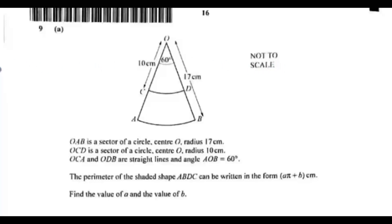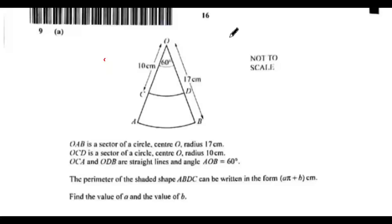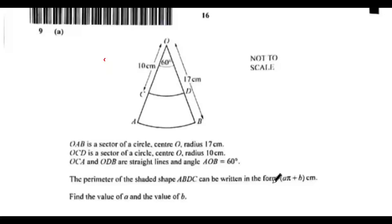Let's jump into question 9A. OAB is a sector of a circle, center O, radius 17 cm. OCD is a sector of a circle, center O, radius 10 cm. OCA and ODB are straight lines and angle AOB equals 60 degrees. The perimeter of the shaded shape ABDC can be written in the form A pi plus B cm. Find the value of A and the value of B.